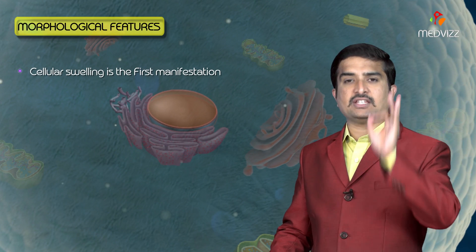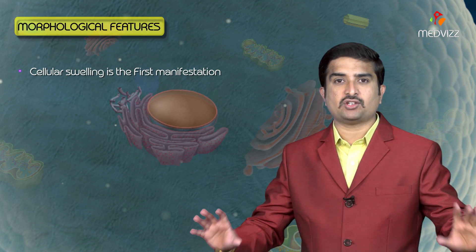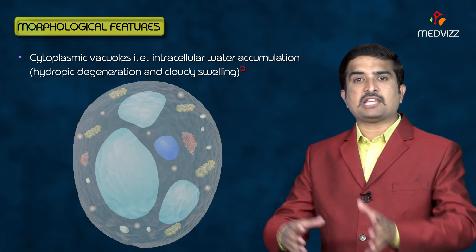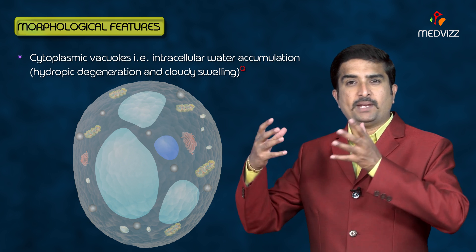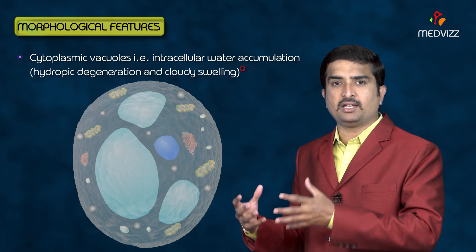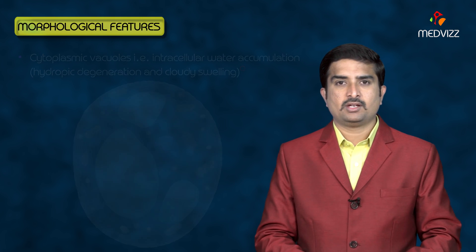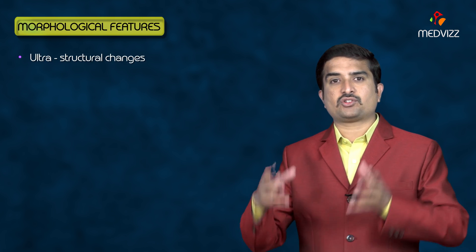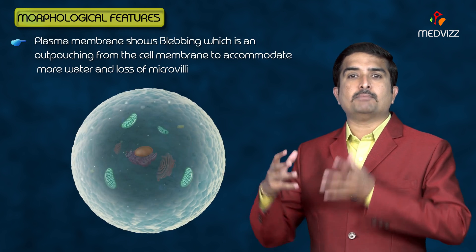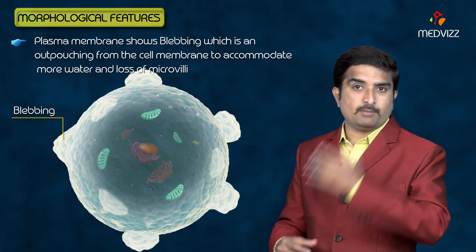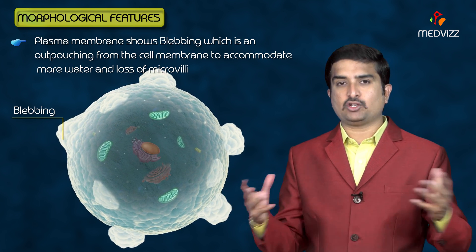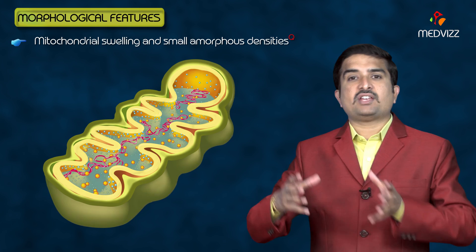The morphological features of reversible cell injury include cellular swelling as the first initial manifestation, along with cytoplasmic vacuoles representing intracellular water accumulation, and hydropic degeneration called cloudy swelling. Ultrastructural changes include plasma membrane blebbing — outpouching from the cell membrane to accommodate more water — loss of microvilli, mitochondrial swelling, and small amorphous densities.